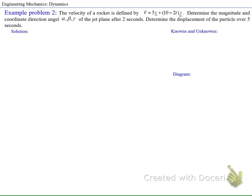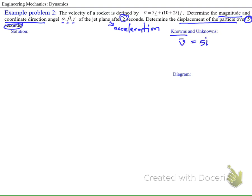The problem says the velocity of a rocket is defined by v equals 5i plus (10 plus 2t)j. Determine the magnitude and coordinate direction angles alpha, beta, gamma of the acceleration after two seconds, and also determine the displacement of the particle over five seconds. This is a simpler problem than the first example we solved. We'll follow the steps — the known is the velocity function, so we'll start from there.